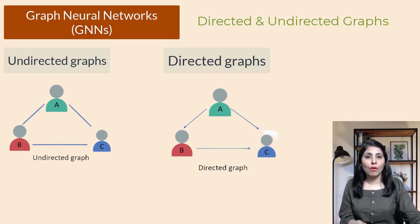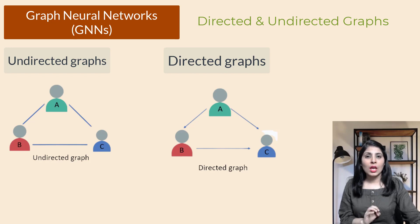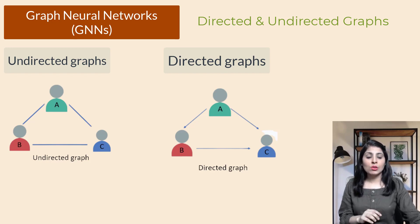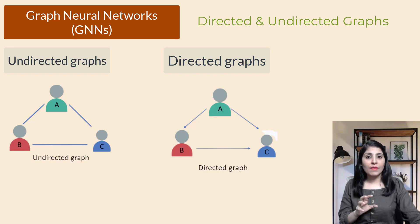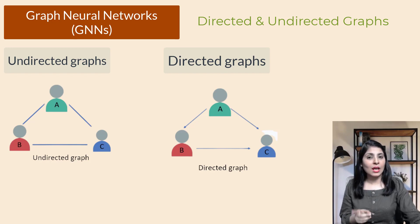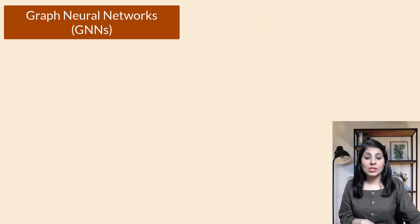Directed graphs are used to show relationships where there is a specific flow of influence or power. In a directed graph, connections have a specific direction — if there is an arrow pointing from friend A to friend B, it doesn't necessarily mean there is an arrow pointing back from B to A. It's like a one-way relationship or influence from one friend to another, showing that one person has some kind of power or control over another.